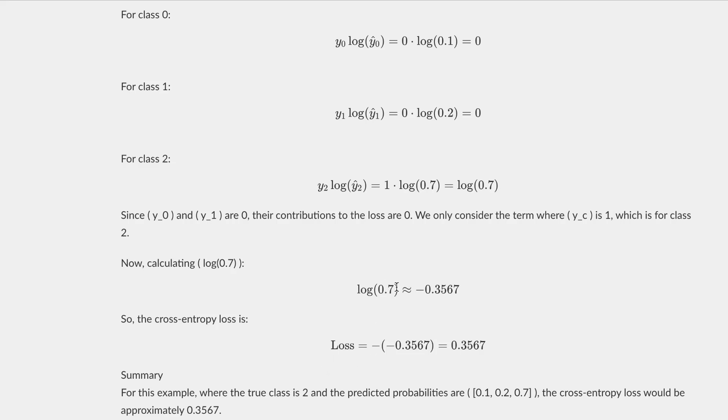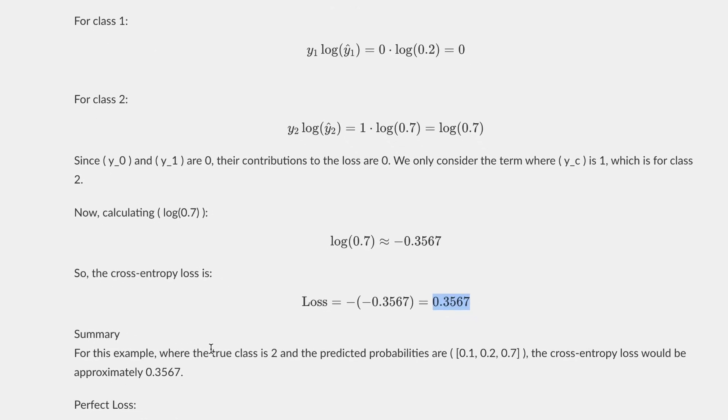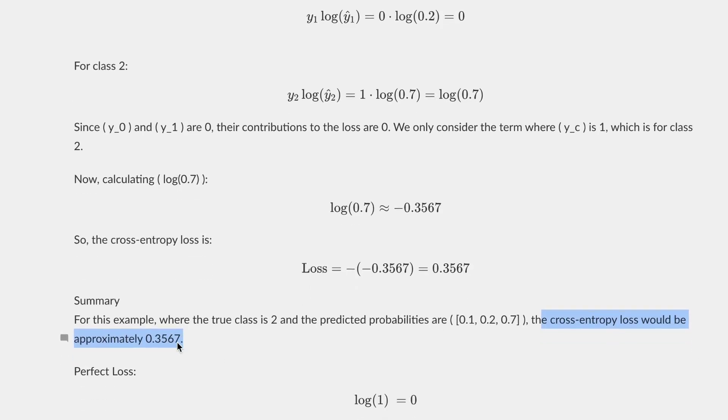Now we get the loss equal to 0.3567. What we would do is iterate over all the examples and add up these losses. So for this example, where the true class is two and the predicted probabilities are 0.1, 0.2, 0.7, the cross entropy loss would be approximately 0.3567.